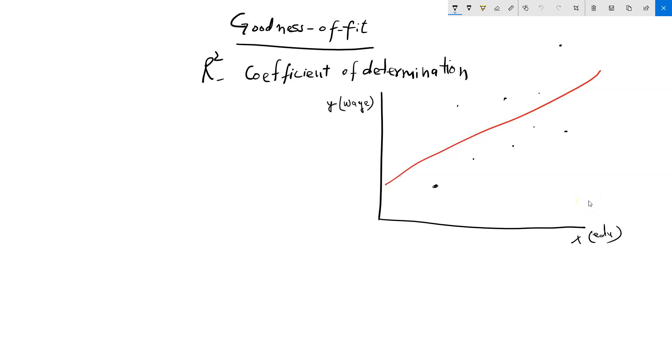In this video, I'm going to talk about goodness of fit or coefficient of determination. In simple words, it's called r squared.